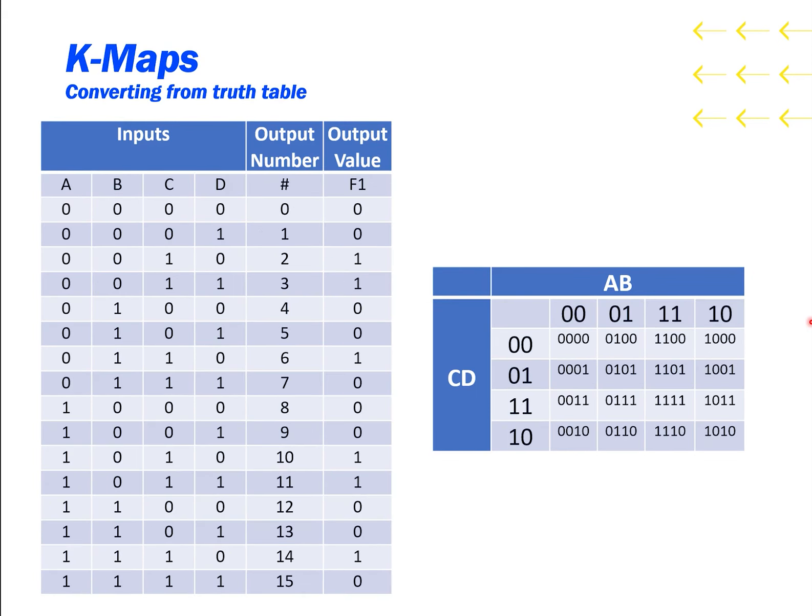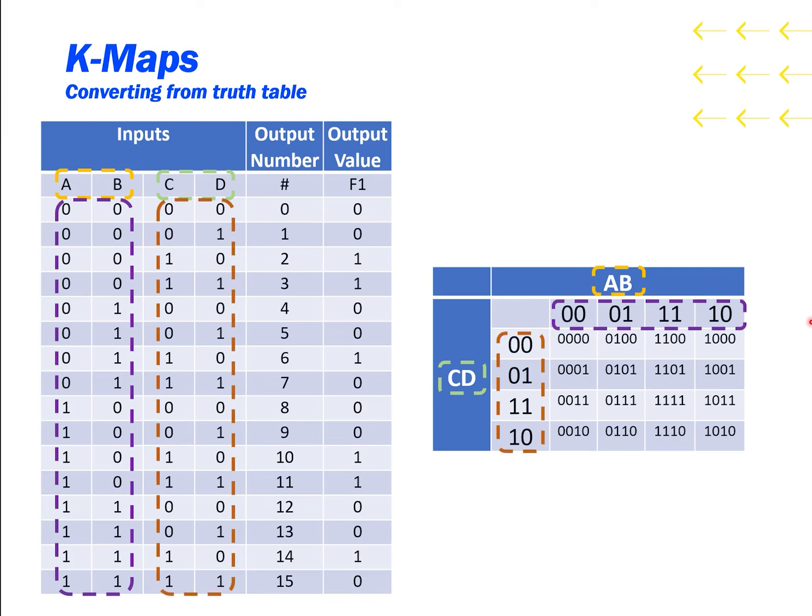How do we get a K-map out of a truth table? Well, just like the truth table, the K-map has to represent all of the different possible inputs. On the top, we have all the different combinations of A and B, and vertically, we have all the combinations of C and D. So combining them in a matrix gives us all the combinations of both.